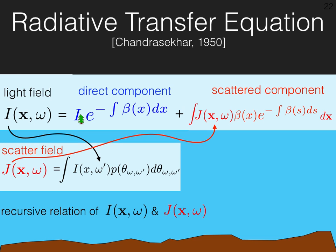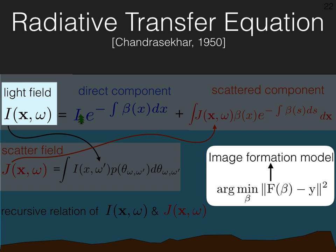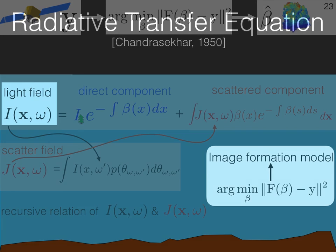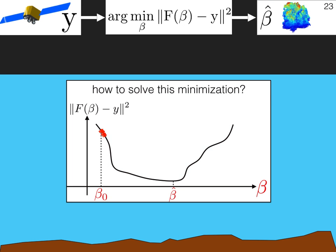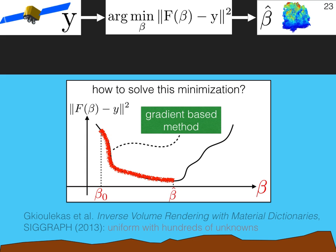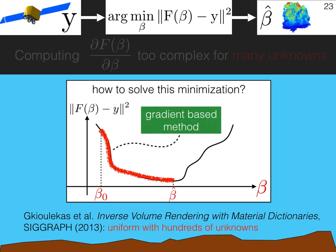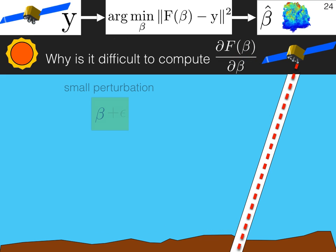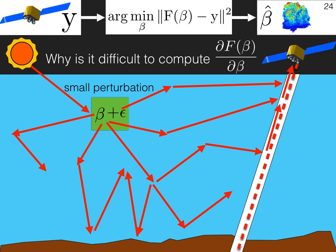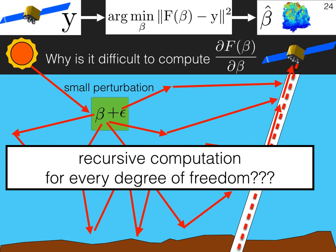For more details on the specific method we use to solve this, please see our paper. Now remember that f is a sampling of i, and this is the image formation model that we use. Going back to the inverse problem, the question is how do we solve this minimization? A typical approach uses a gradient-based method. This was done in previous work, however, for a homogeneous medium with hundreds of unknowns. We have an unknown at every voxel — how can we scale this up to half a million unknowns? The gradient is just too complex to compute, because a small perturbation to the optical density at one voxel should affect the entire light field, meaning the light field needs to be recursively computed for every degree of freedom, and this is computationally prohibitive.